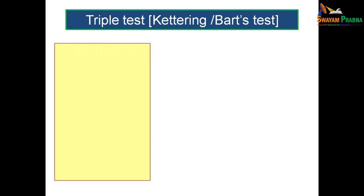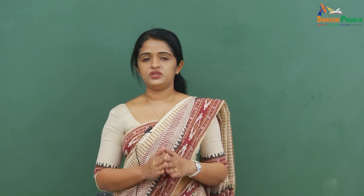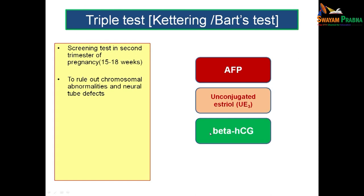The triple test, also known as the Kettering or Bart's test, is a screening test done in the second trimester from 15 to 18 weeks of intrauterine period to rule out chromosomal anomalies and neural tube defects. The three components measured are alpha-fetoprotein, unconjugated estriol, and beta-HCG. In trisomy 18 (Edward syndrome), all three values are low.